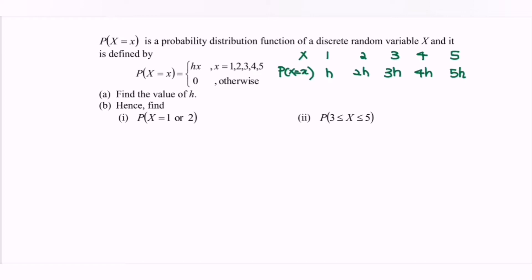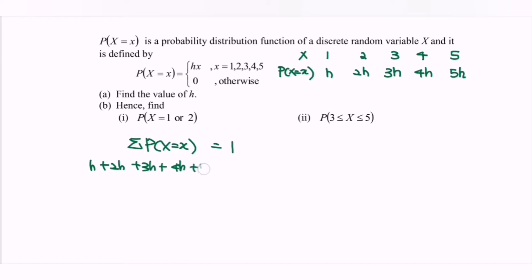In order to find the value of h, we note that it is a discrete random variable, so the summation of all probabilities must be equal to 1. Referring to the table, we sum: h + 2h + 3h + 4h + 5h = 1, which gives 15h = 1, so h = 1/15.